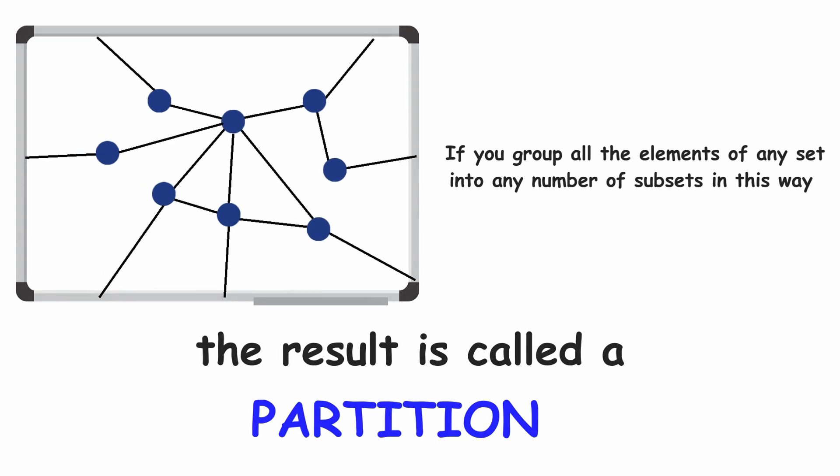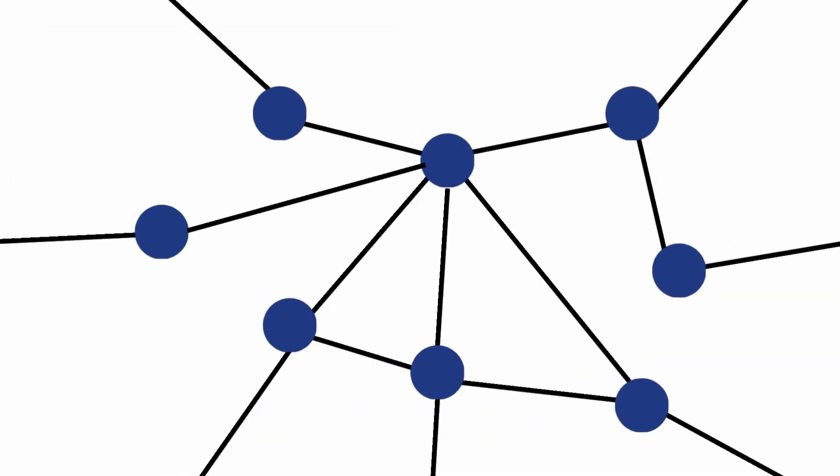To distinguish which vertex is in which subset, let's color them differently, say orange and green.